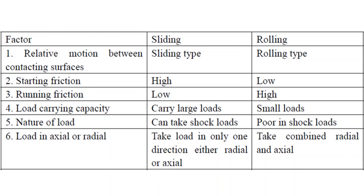The starting friction is really high in sliding contact bearings because initial metal-to-metal contact happens, while in rolling contact bearings the starting friction is less. If we talk about the running friction, once the lubricant is introduced it is less in the sliding contact bearing.